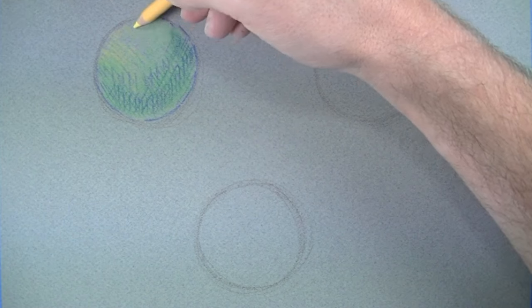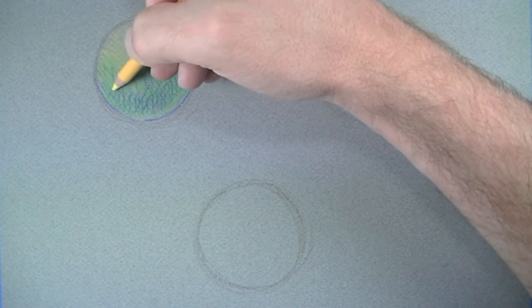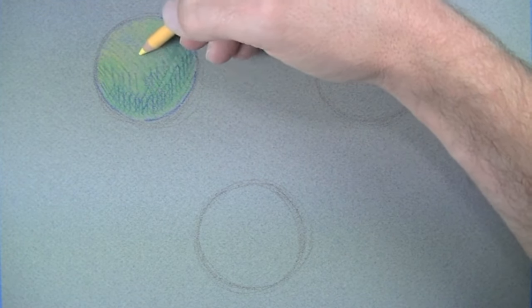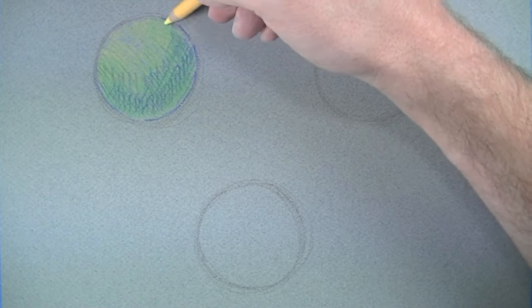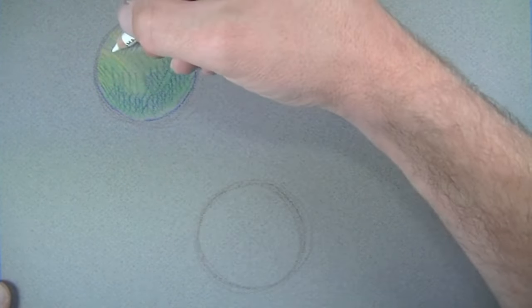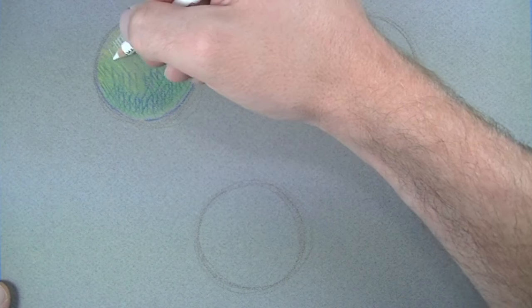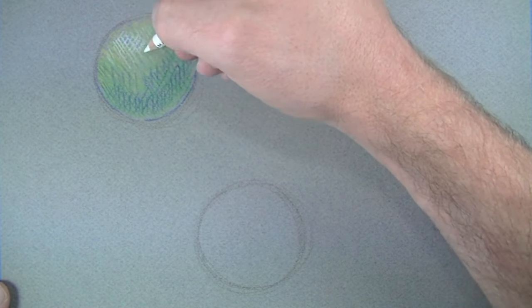Now on the side where the light source is coming from, we're going to add some yellow. Here again, we're just hatching and cross-hatching that yellow directly on top of the green. This is going to create some areas of yellow-green and help establish the illusion of a light source. We'll make that light source a little bit more intense by cross-hatching some white over the top of the yellow-green.